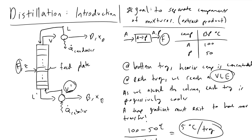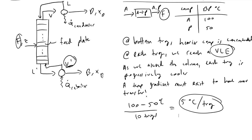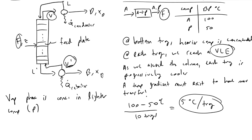At each tray, the colder temperature produces a new vapor-liquid equilibrium. By the time we reach the condenser at the top of the distillation column, the vapor phase V is concentrated in the lighter component — our product P. In the condenser, heat is removed from this stream, causing the incoming vapor to condense. We get a liquid rich in product P that we can sell to market because it is now purified.